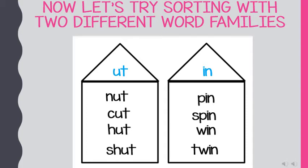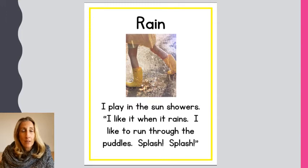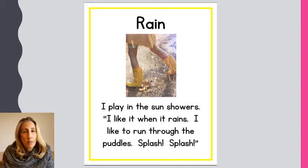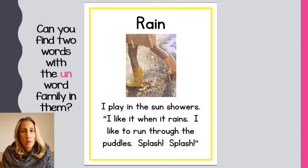You did a great job doing that. Give yourselves a pat on the back. Now let's read a short text together. The name of this text is 'Rain.' I play in the sun showers. I like it when it rains. I like to run through the puddles. Splash. Splash. Now let's try to find two words with the word family 'un' in them. Can you do it with me?